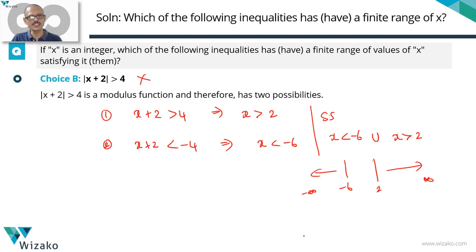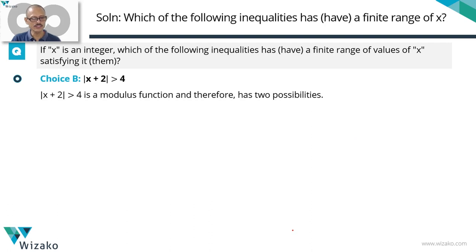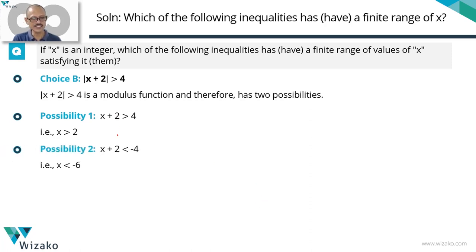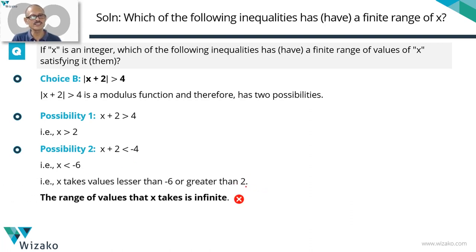Since both B and D are not the answer, you can quickly eliminate answer option E as well, because E says 'B and D.' So the answer is either C or D — one of the two must have a finite range of values. For option B: x < −6 or x > 2, which is an infinite range. Choice B is confirmed not the answer.